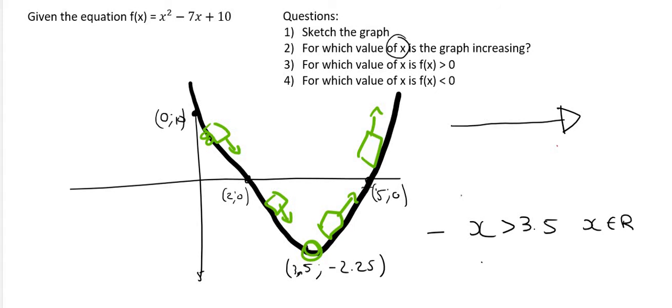You could also use, so this is one way to give the answer, the other way is to use the bracket method. So you would say x is an element going from 3.5 all the way to infinity. Okay so these are two different ways. Each student is different. You must choose whichever one's best for you.